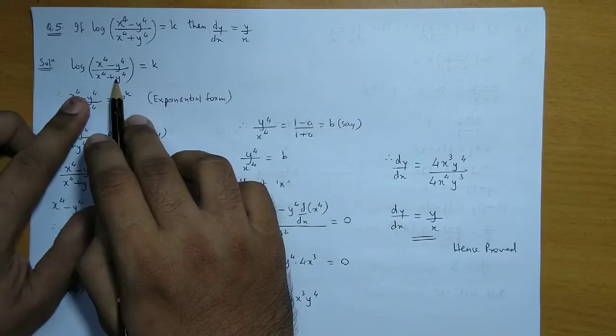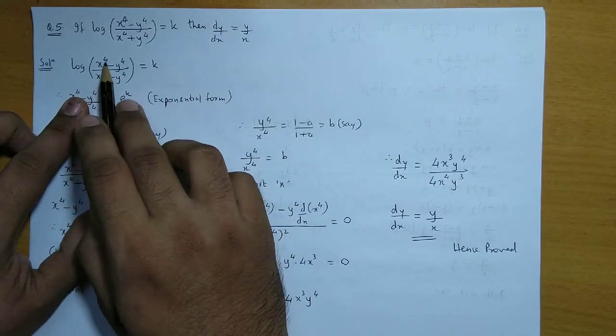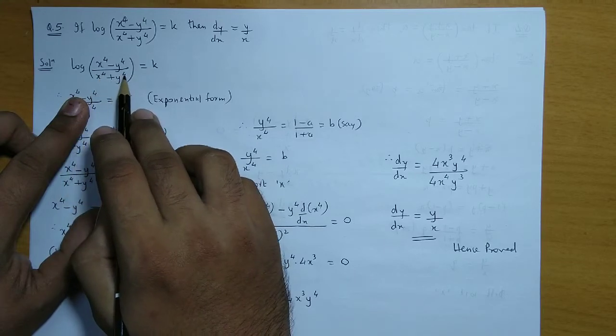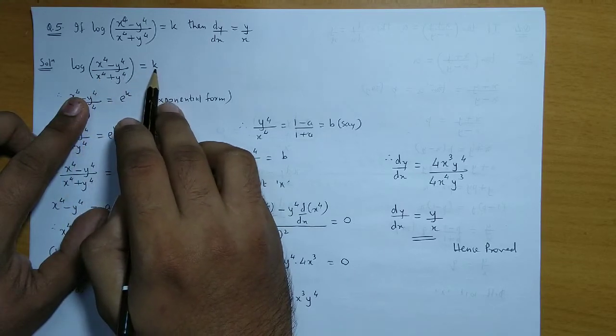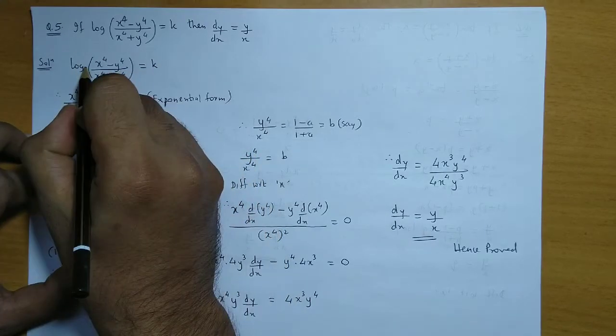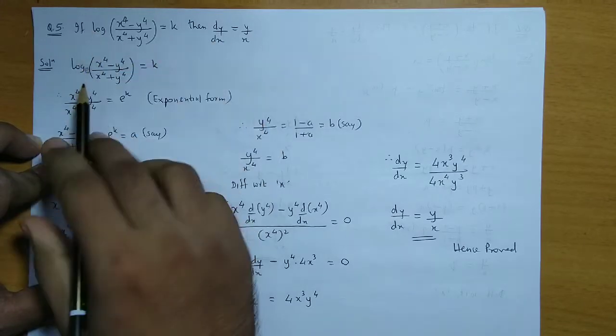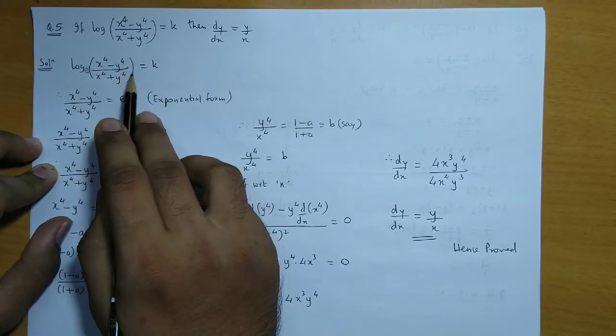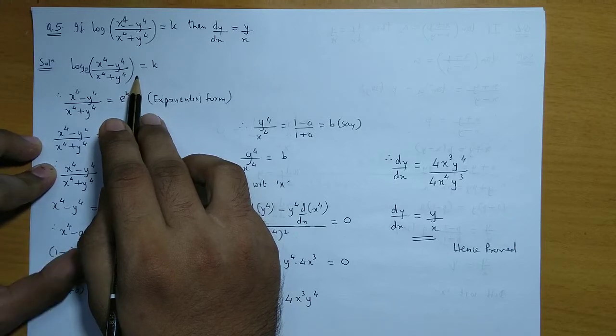Now let us consider the log term. Log of (x⁴ - y⁴)/(x⁴ + y⁴) equals k. In calculus, we consider log ka base as e. So this is the log form. We will convert this log form into exponential form.